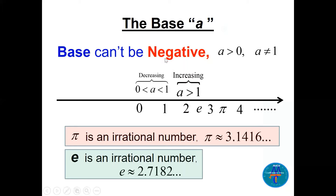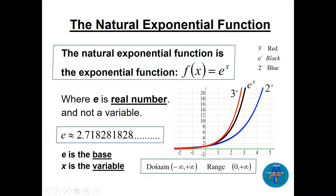So e is an irrational number and we can use it as one of the bases. Just to remind you: the base in the exponential function cannot be negative, so the base a is greater than zero and a cannot be one. It's either greater than one where the function is increasing, or between zero and one where the function is decreasing. Also, π between three and four is irrational, and e between two and three is also irrational.